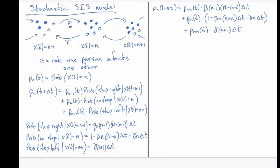All of these are estimates in the limit that delta-t is small. The reason is that we need delta-t small enough so that the probability of any two simultaneous events — somebody recovering and somebody getting infected in the same interval, or two people recovering, or two people getting infected — is negligible compared to the probability of one event. In that limit these expressions are a good approximation, and as we take the limit as delta-t goes to zero, they become exact.